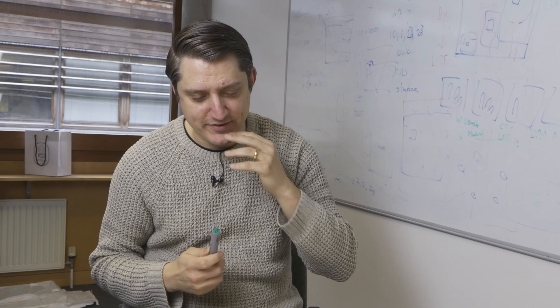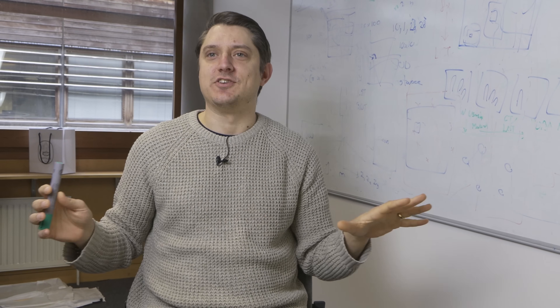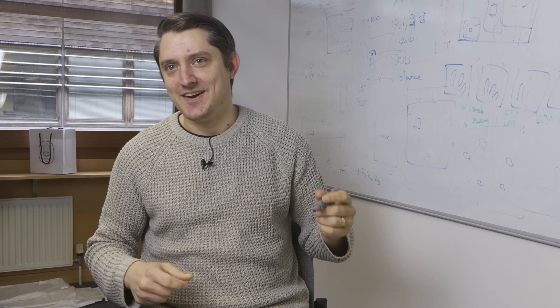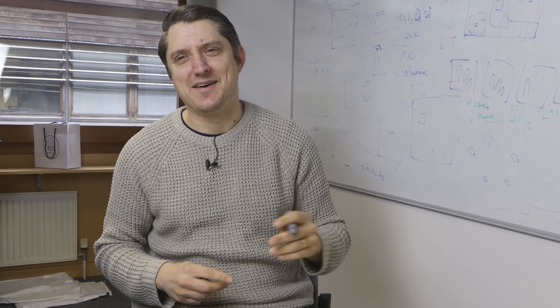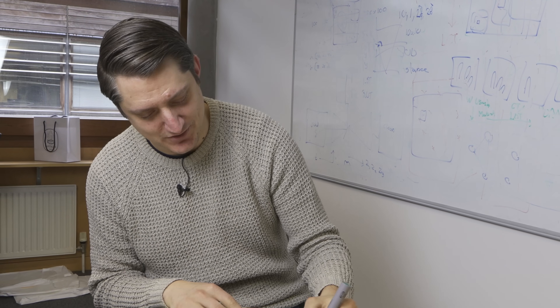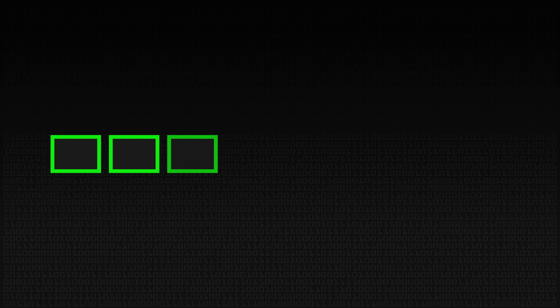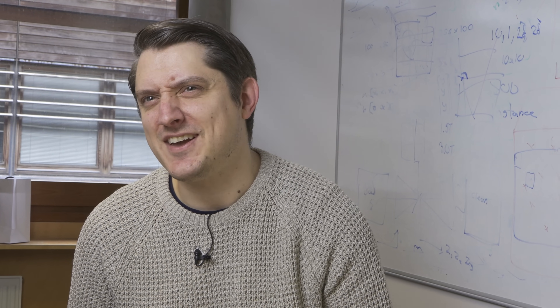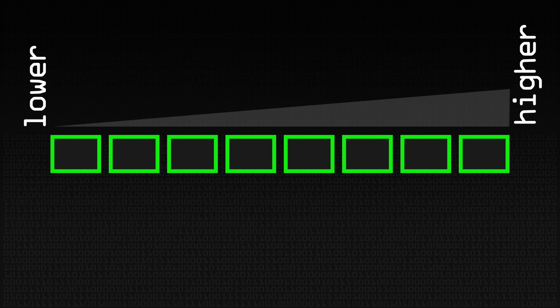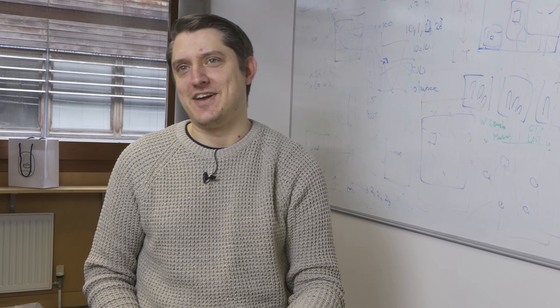So let's imagine we have some boxes — it's like Deal or No Deal, sort of, but the analogy is going to break down pretty quickly. I'm going to draw some boxes. Now, you don't know what numbers are in these boxes; it could be any number. But we do know they're in order — the lowest number is here and the highest number is over here.